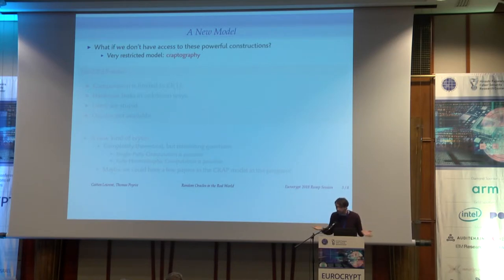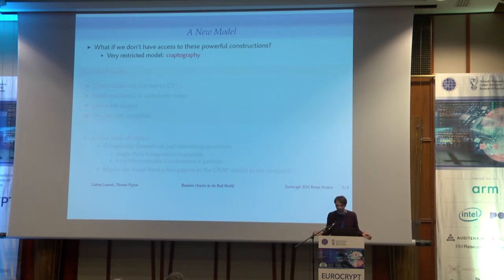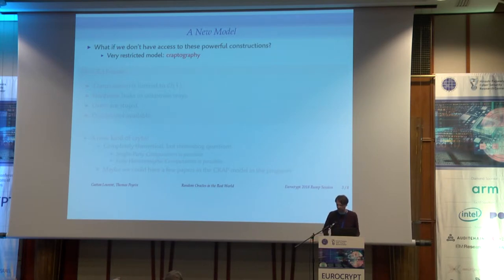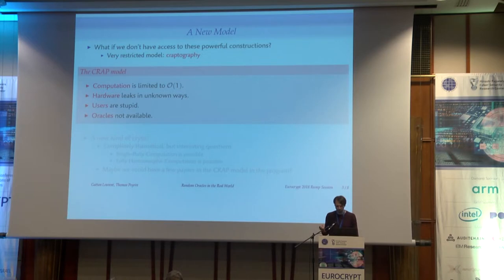So if we want to get rid of them, we need a very, very small model — a model where we can't do anything. So maybe we can call it craptography. It's like cryptography, but all we can do is just crapt, basically. I'd like to introduce a crapt model.